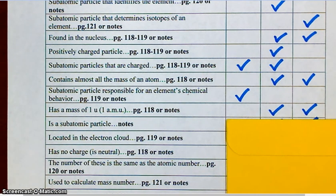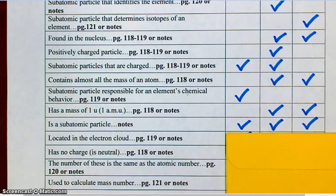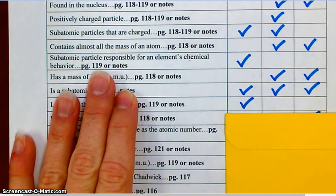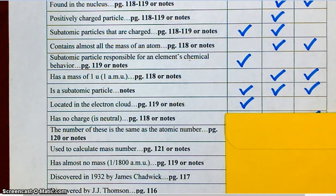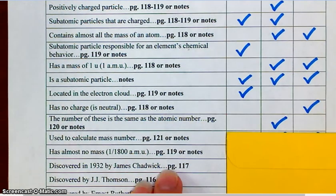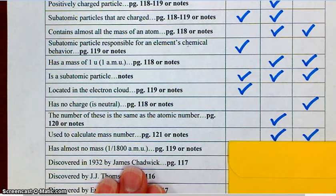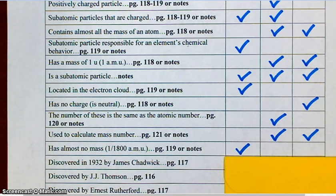Is a subatomic particle. All of them. They are all subatomic particles. Located in the electron cloud. Why is it called the electron cloud? Because it contains electrons. Has no charge. Neutrons are neutral. No charge. The number of these is the same as the atomic number. Protons. Only protons. Used to calculate mass number. Protons and neutrons. Why not electrons? Because they have almost no mass, which is the answer to the next question. So, we use protons and neutrons to calculate the mass of an atom. We do not use electrons because they have almost no mass.